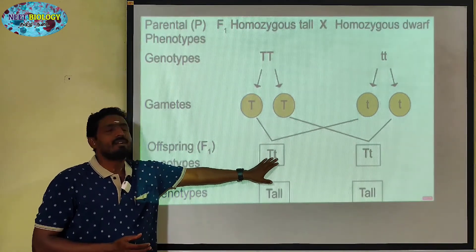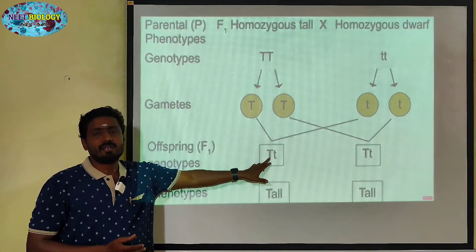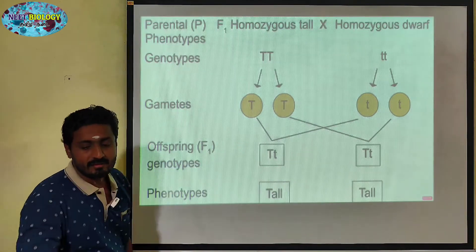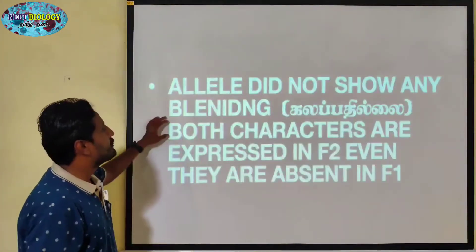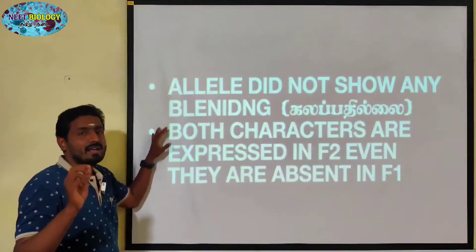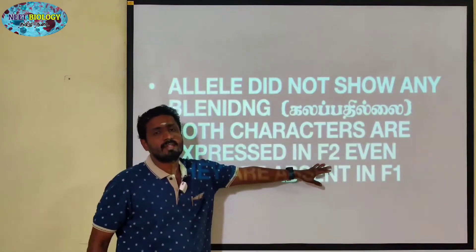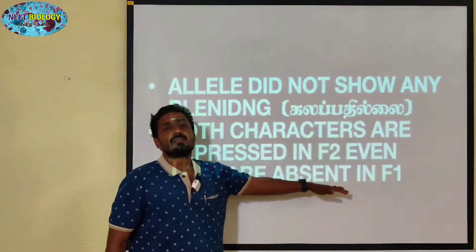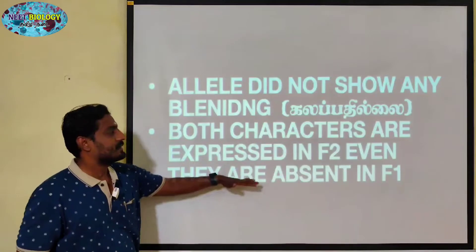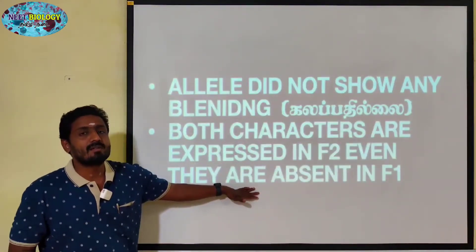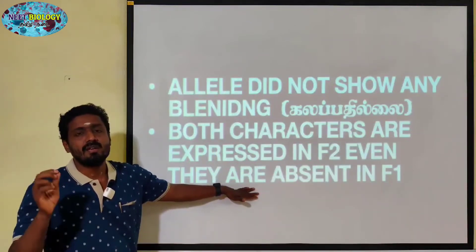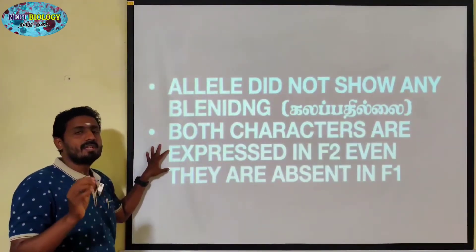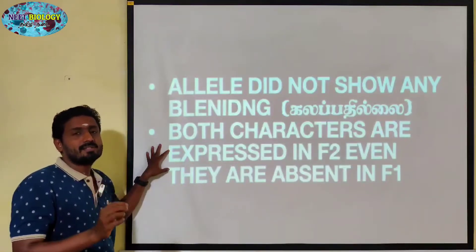In F1, Capital T is expressed. The recessive small t is not expressed in F1. Both characters — tallness and dwarfness — are expressed in F2. Alleles did not show any blending. Both characters are expressed in F2 but the recessive is absent in F1.